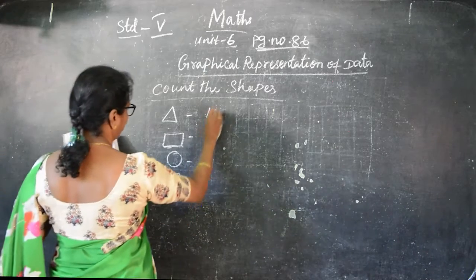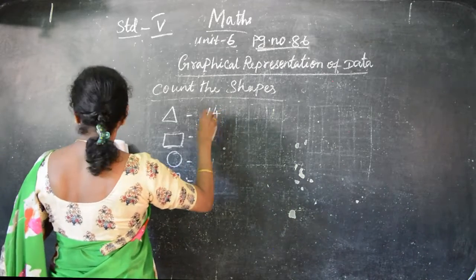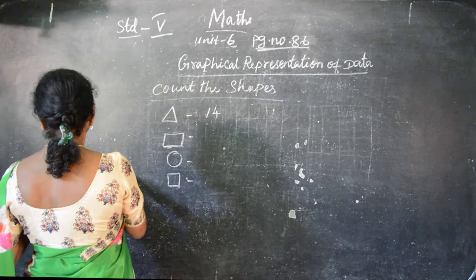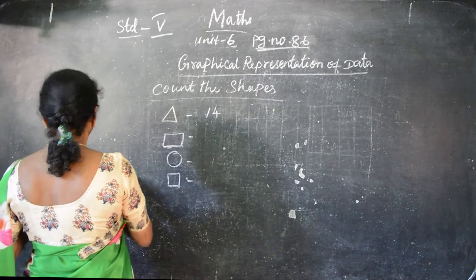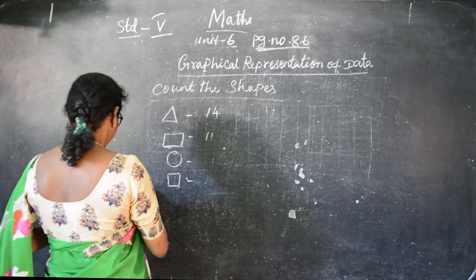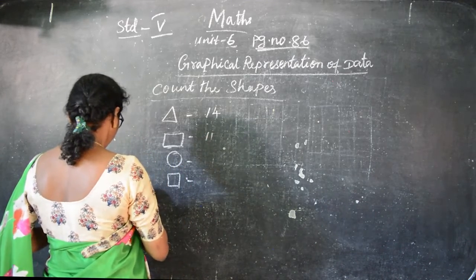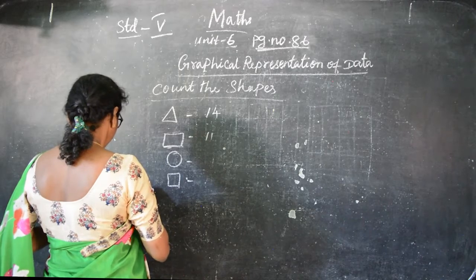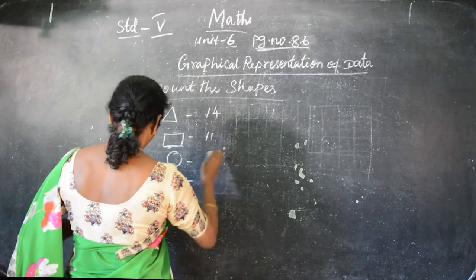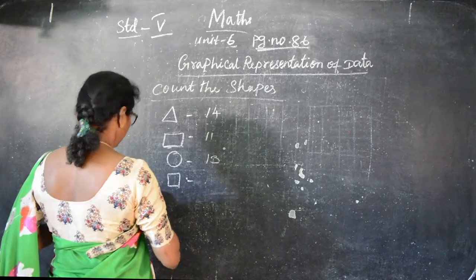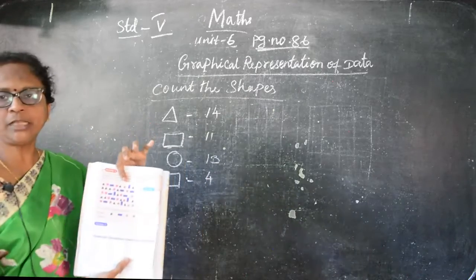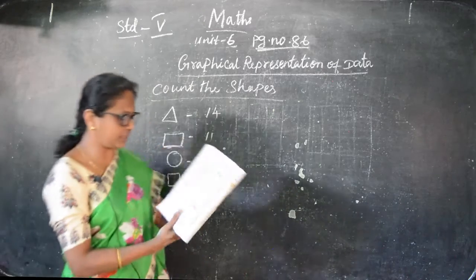So you can count and write 14 triangles. Then how many rectangles - 11. Then how many circles - 13. And how many squares - 4 squares. So like this you can count and write everything.